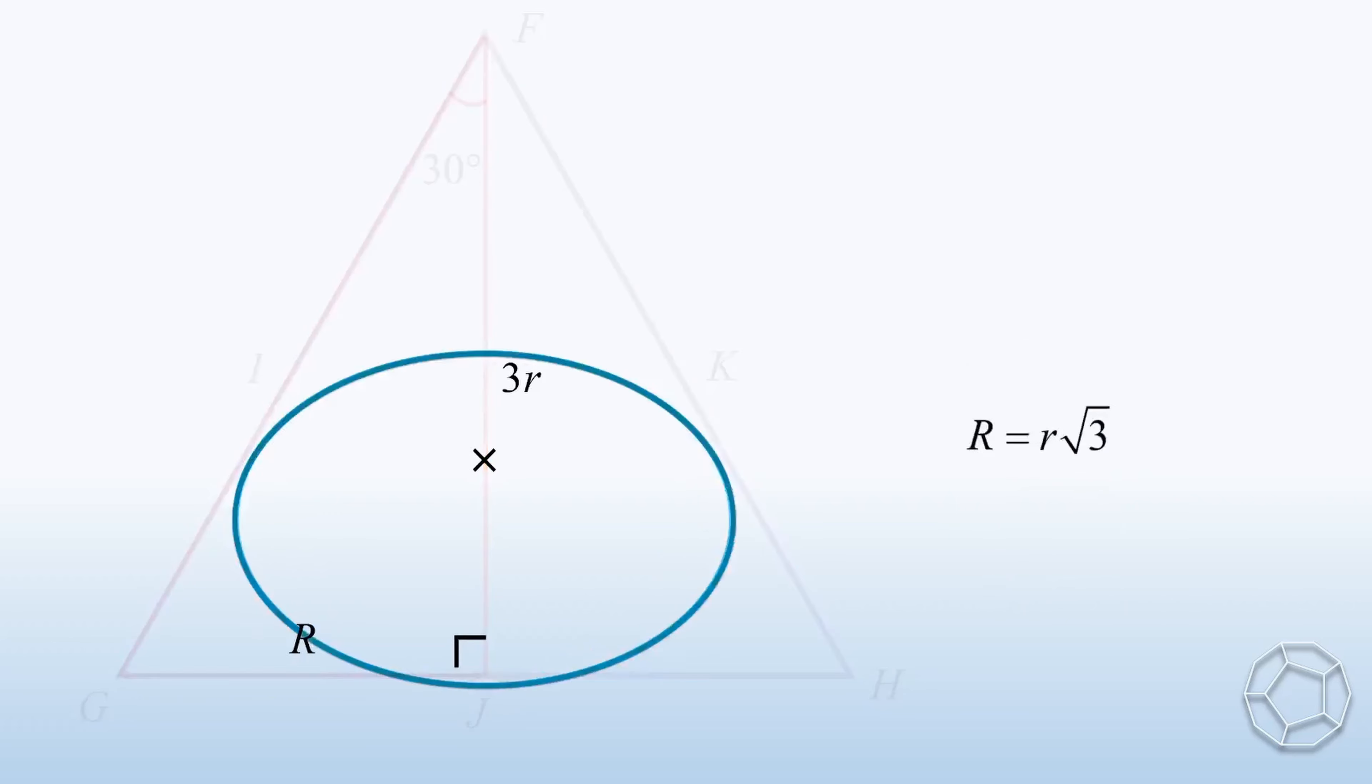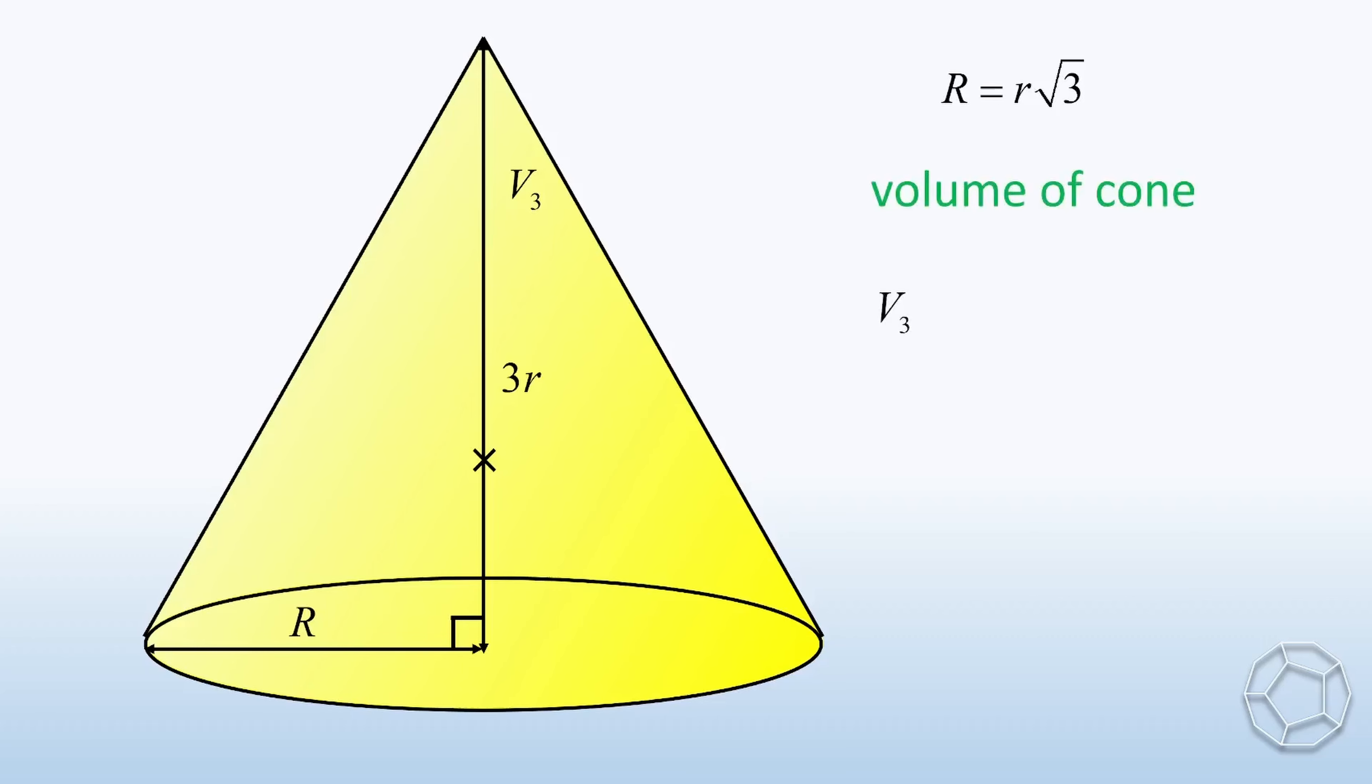The volume of the cone is equal to 1 over 3 pi times base radius capital R square times the height 3 times small letter r. Cross out the three right here. Then we put capital R equals small r times square root 3. So the volume is equal to 3 pi r cubed.